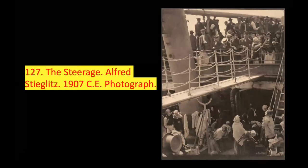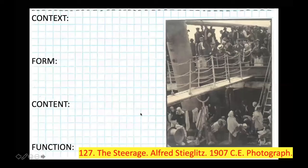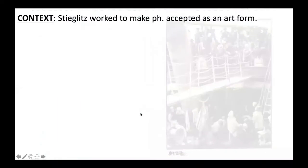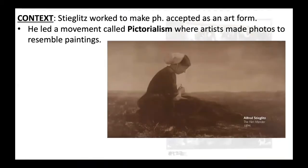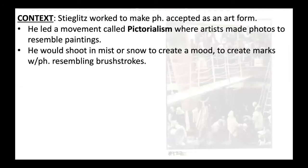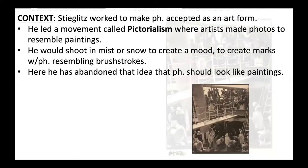The last photo we're going to talk about is called The Steerage by Alfred Stieglitz, 1907, a photograph. Stieglitz worked to make photography accepted as an art form. He led a movement called Pictorialism, where artists made photos to resemble paintings to create a higher art form. He would shoot in mist or snow to create a mood and to create marks resembling brushstrokes. In The Steerage, he's already abandoned the idea that photographs should look like paintings, but his artwork is still all about photography as an art form.